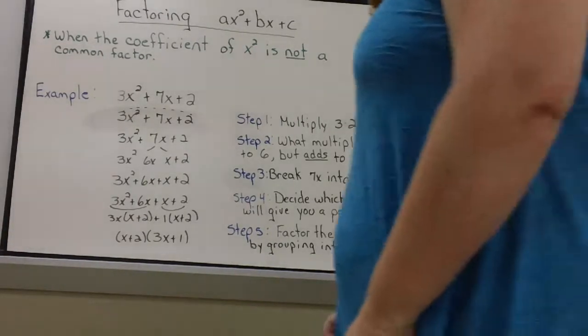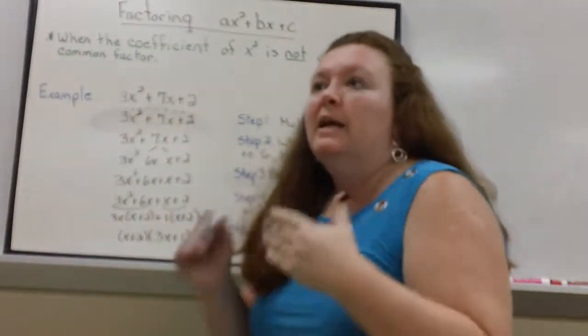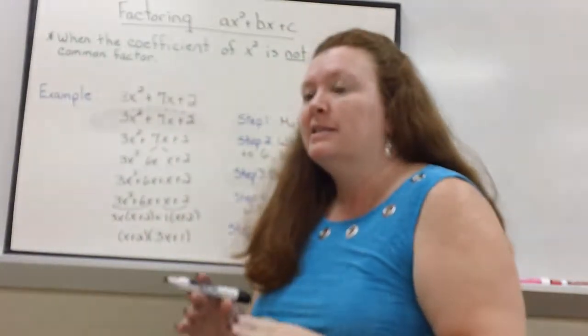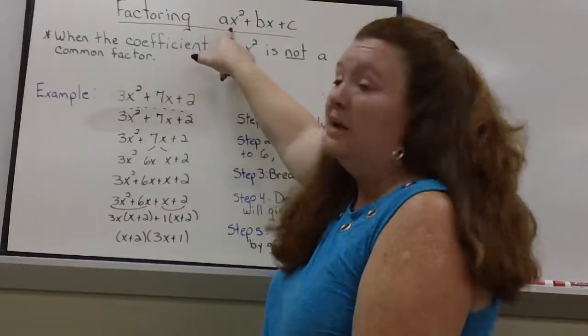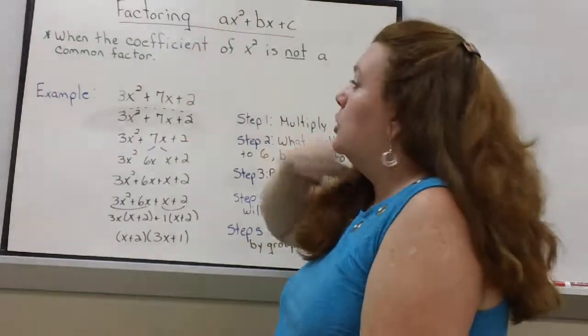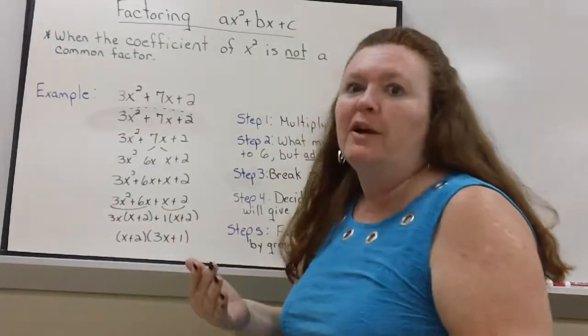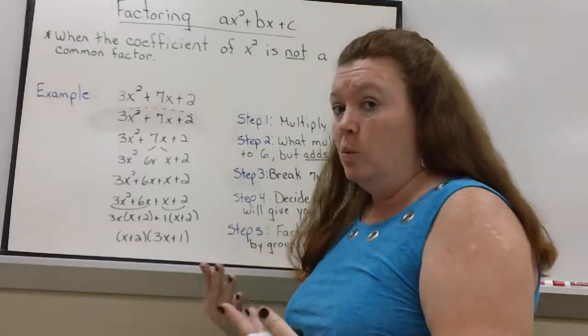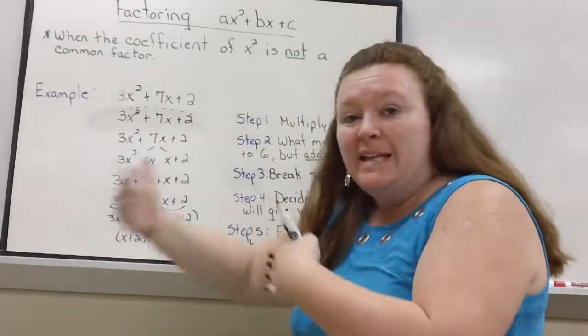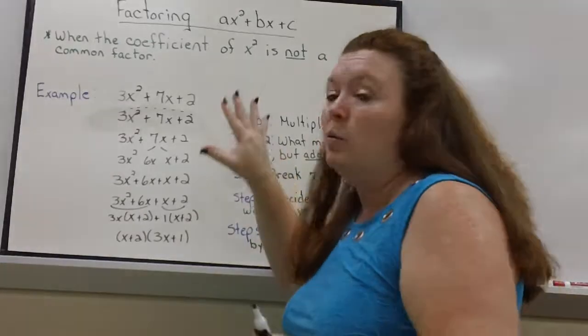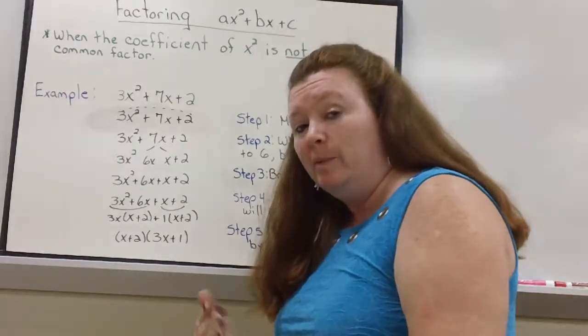Okay, all right. Today what we're going to do is work on factoring a trinomial that does not have a 1 as the coefficient of the x squared. So sometimes when there is a number in front of x squared that's not a 1, it might be a common factor that you can take out. But when it's not, then we have a problem with trying to factor the trinomial.